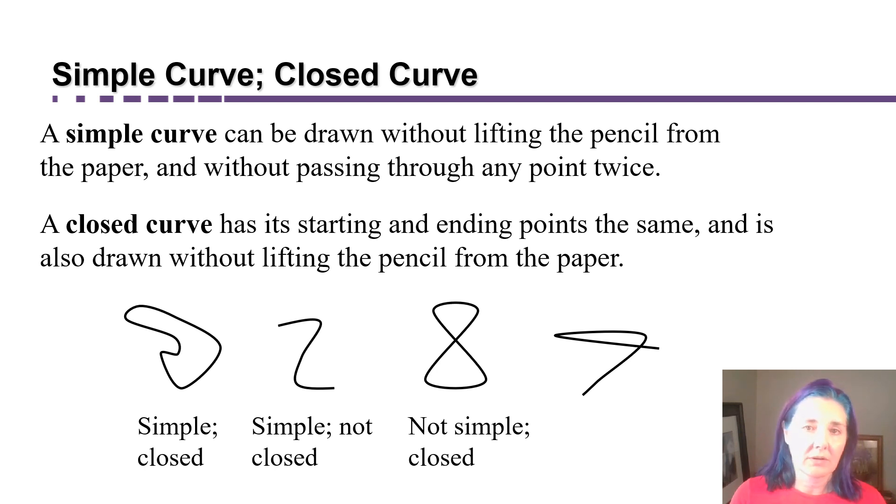And how about this one? Is this a simple curve? No, because it passes through one point twice. Is it a closed curve? No, because it begins and ends at two different points. So, this is an example of a curve that is neither closed nor simple.